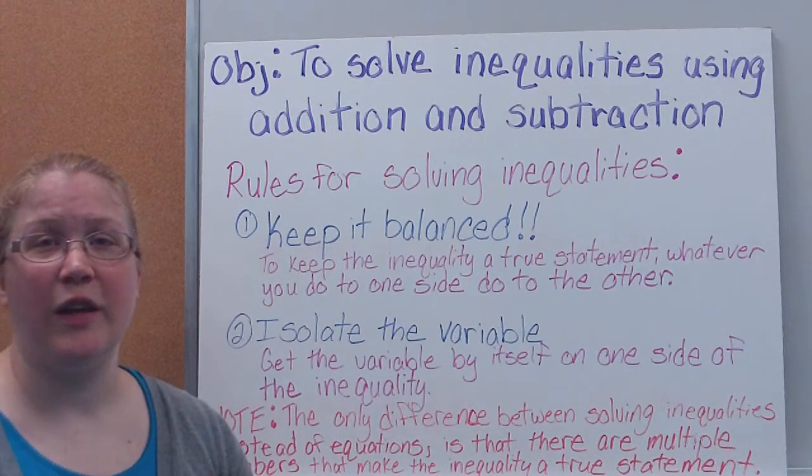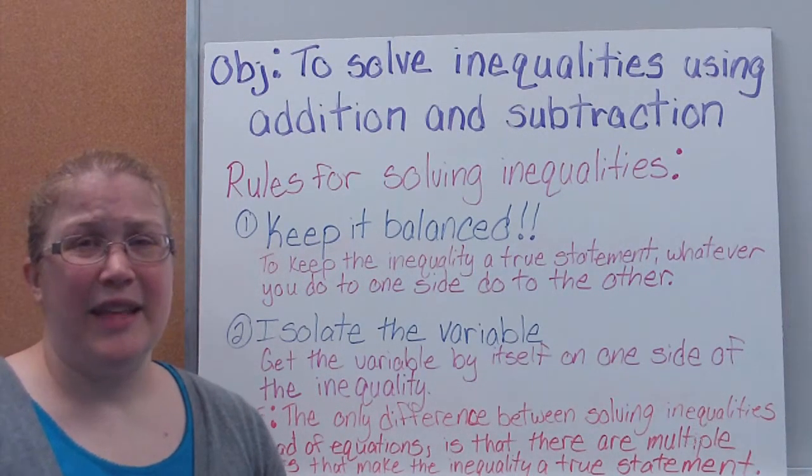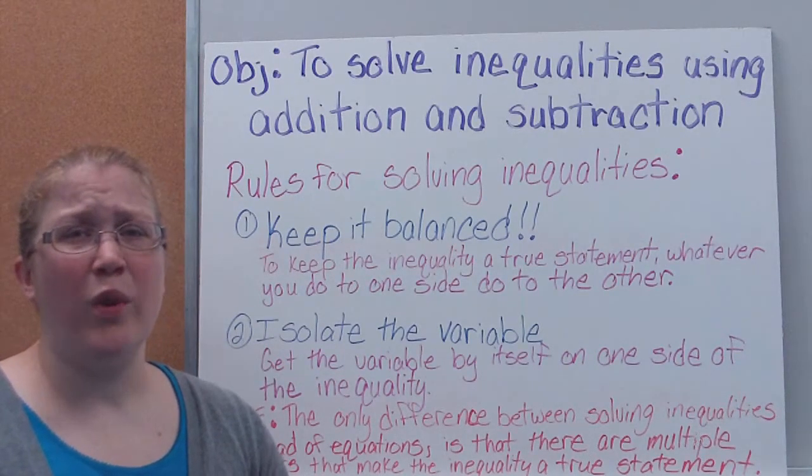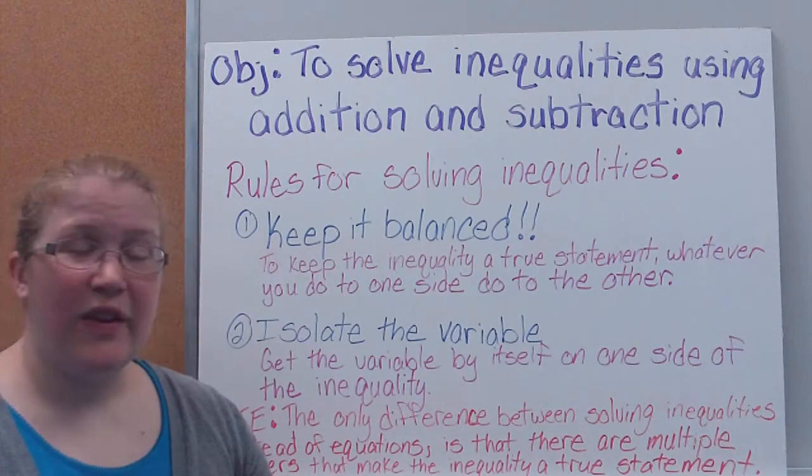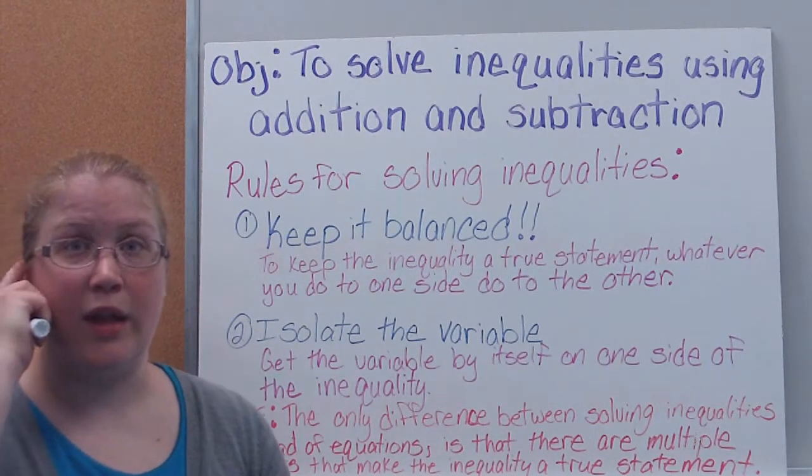And then obviously we want to isolate our variable. Once the variable is by itself, we'll know which values work for our answer. So we want to get the variable by itself on one side of the inequality.